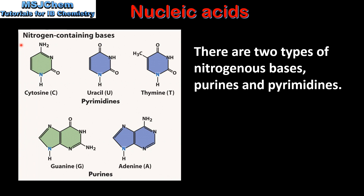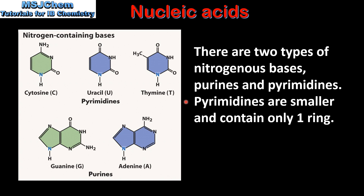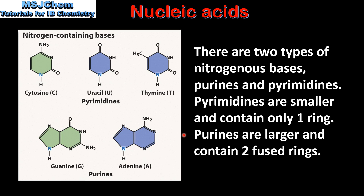Next we look at the nitrogenous bases. There are two types of nitrogenous bases: purines and pyrimidines. Pyrimidines are smaller and contain only one ring. At the top we have the pyrimidines and as you can see they only contain one ring. In DNA we have cytosine and thymine, but in RNA we have uracil instead of thymine. Purines are larger and contain two fused rings. At the bottom we have the purines, which are guanine and adenine. The purines contain two fused rings.